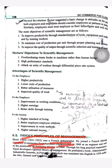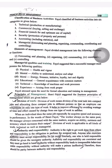Through his long practical experience, Henry Fayol developed a general theory of management. He published a book, 'Administration Industrielle et Générale' in French in 1916, which was translated into English in 1929 under the title 'General and Industrial Management.' So let's move further.